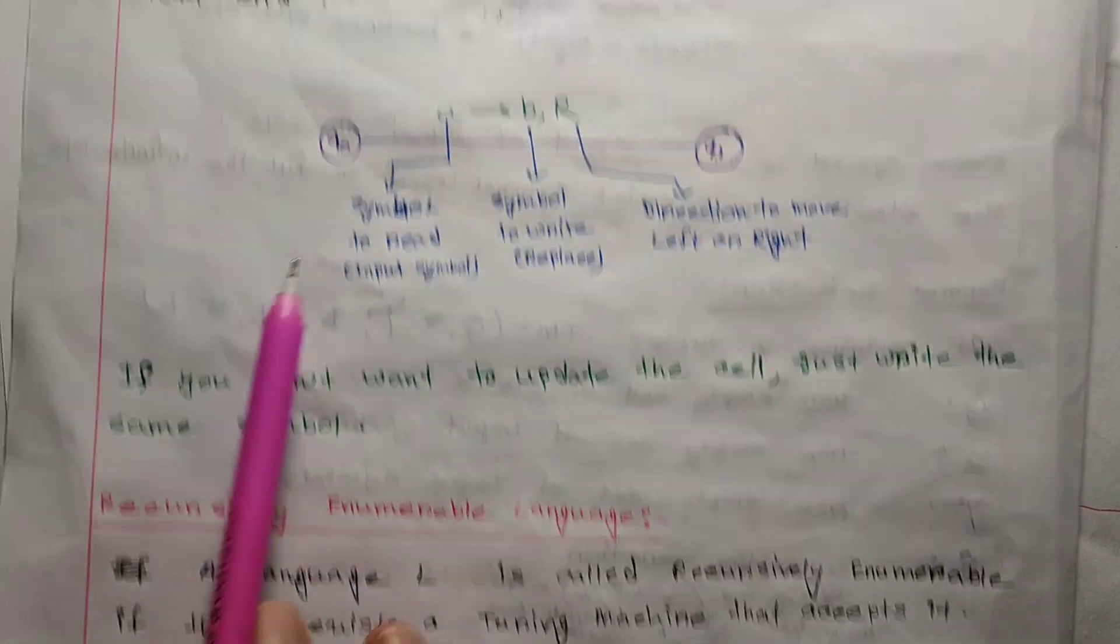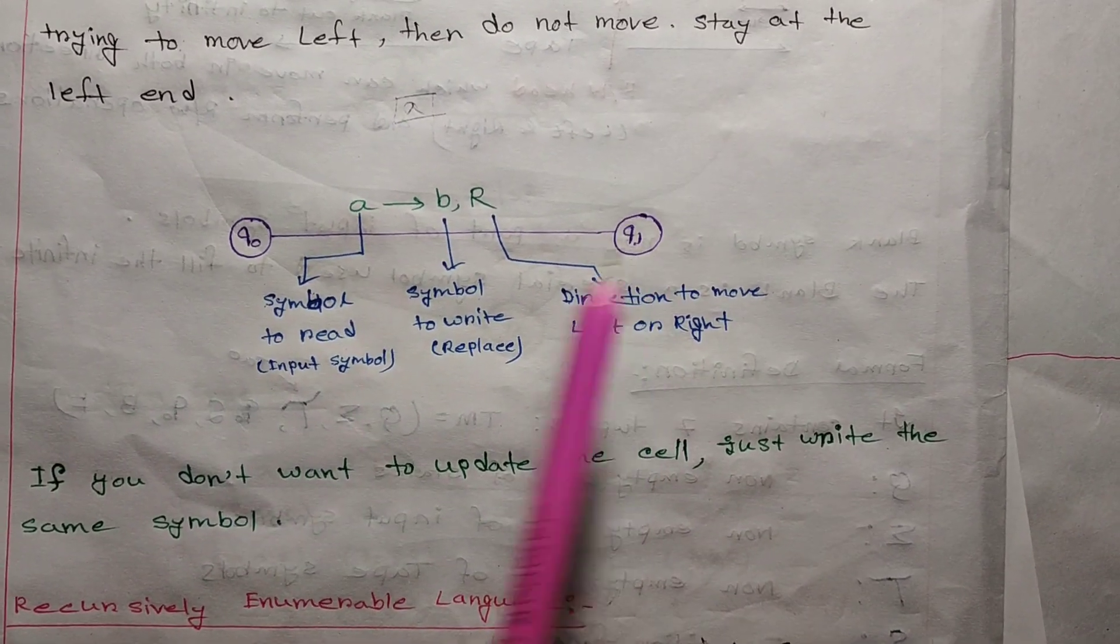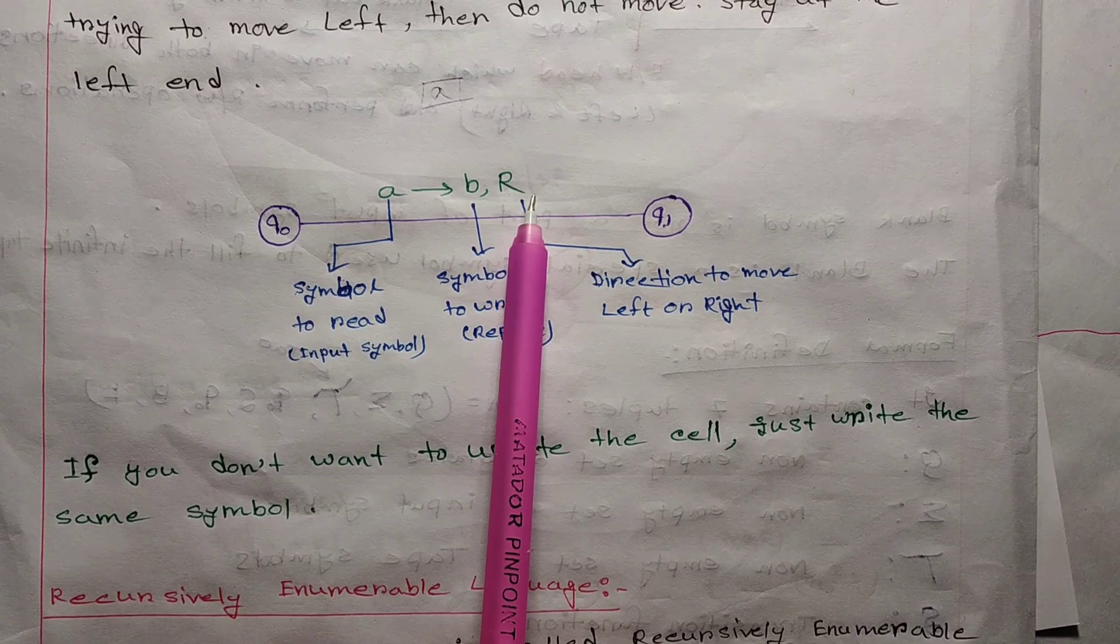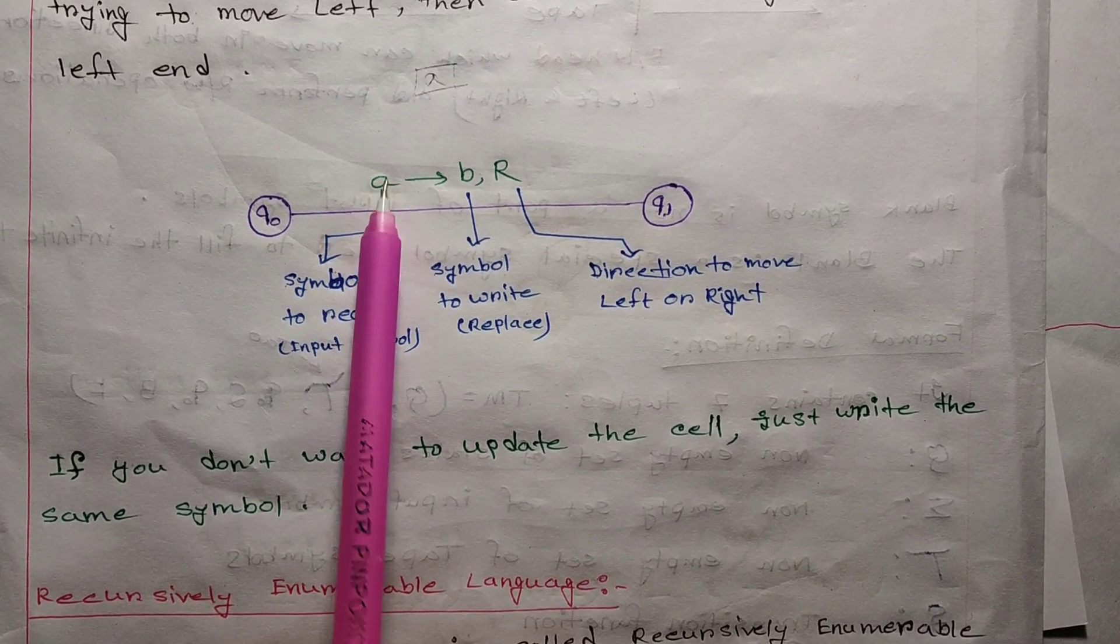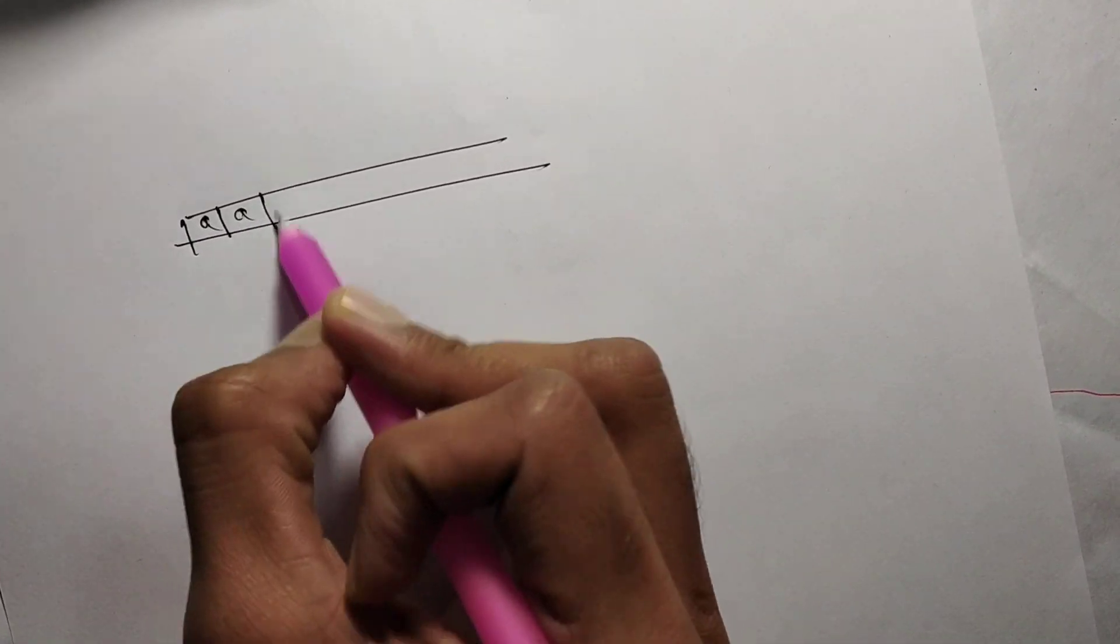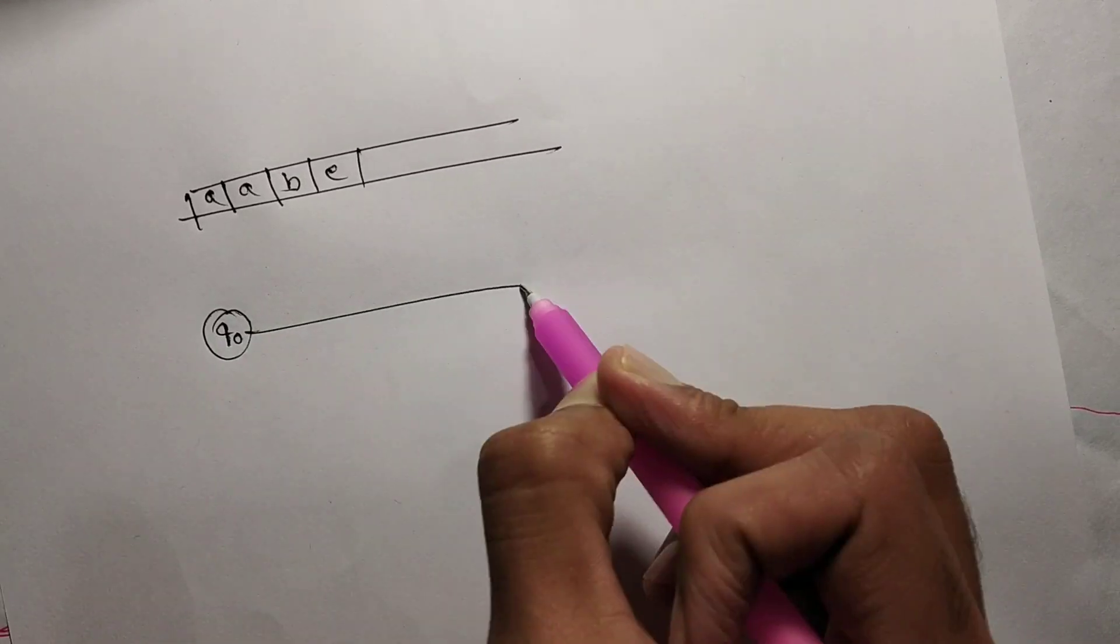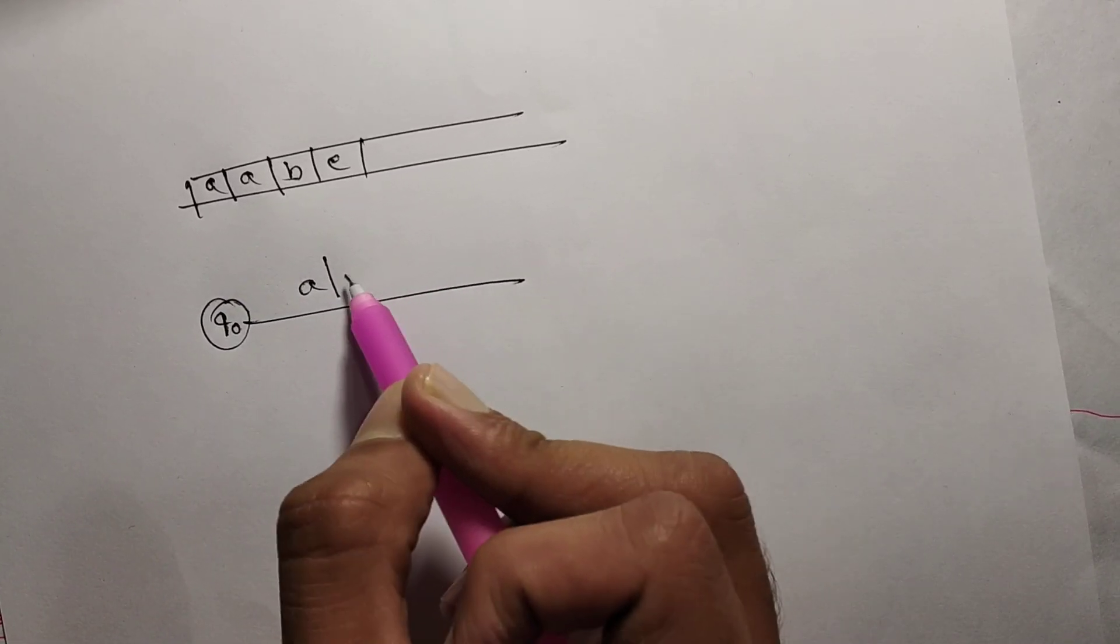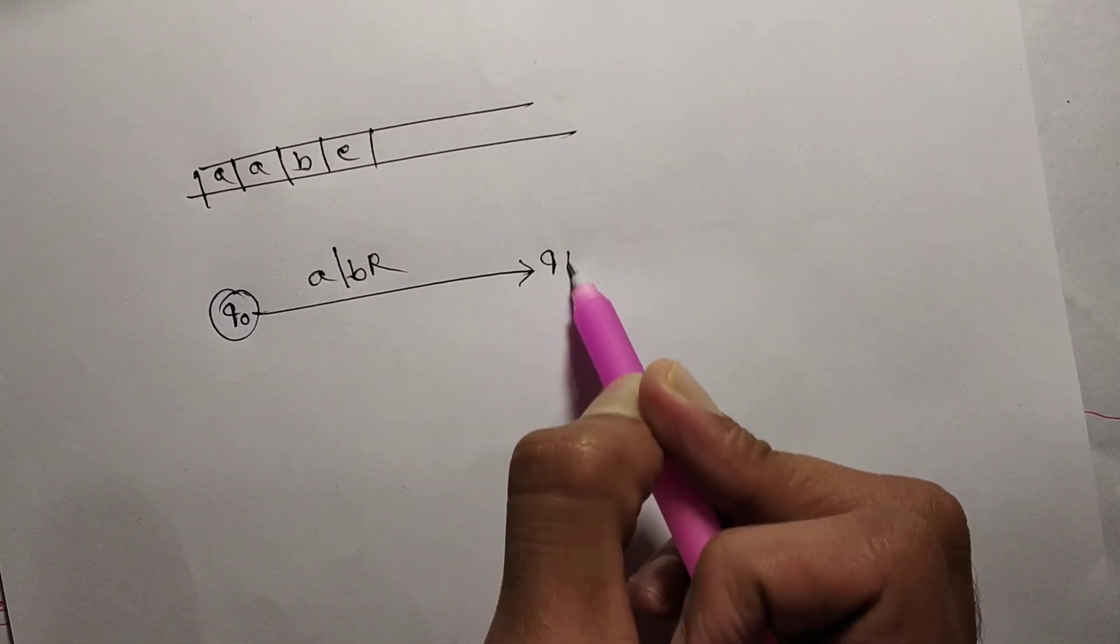For example, Q0 is one state, Q1 is another state. A is the input symbol, B is the symbol to replace it with, and R or L indicates right or left shift to the next state.